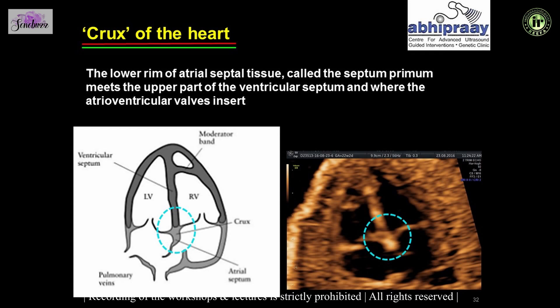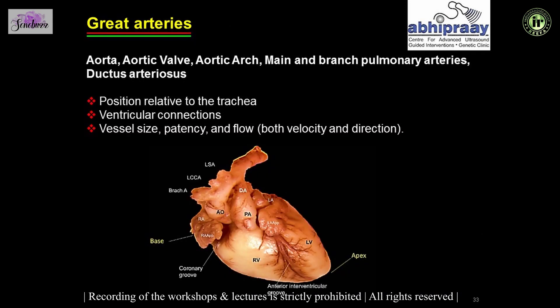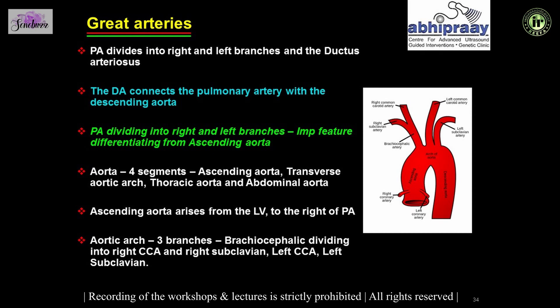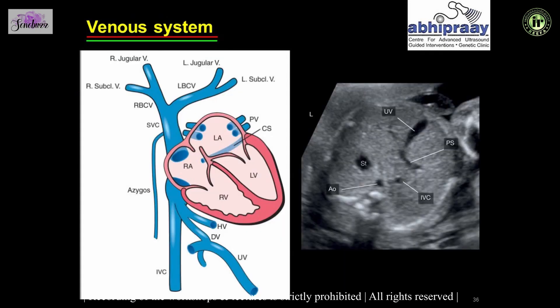The crux of the heart is where the inter-atrial septum joins the interventricular septum and the two AV valves insert — this must be visualized in every patient. The great arteries have to be seen, assessing their origin, size, patency, flow, ventricular connections, and position relative to each other. The pulmonary artery divides into left and right branches — this is an important feature differentiating it from the ascending aorta, which curves to form an arch without dividing.